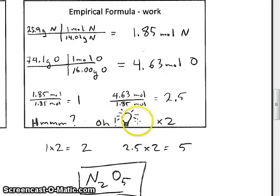Well, here's my bright idea. I'm going to multiply both of my values, 1 and 2.5, by 2. This will produce a value here of 2. Here we'll get a value of 5. So I can determine that the ratio of nitrogen and oxygen in this compound would be N2O5.